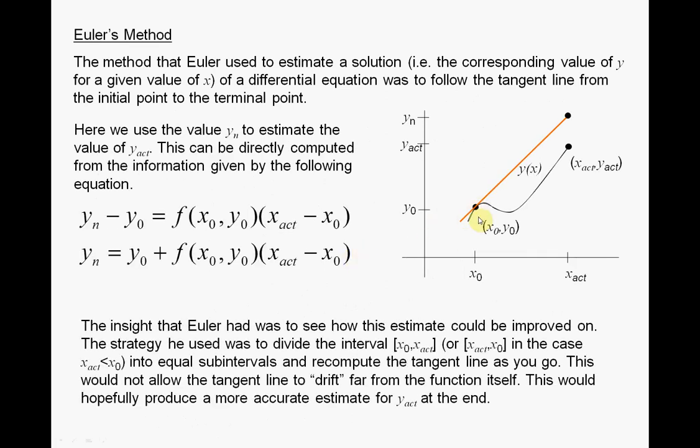Now Euler's method here, briefly, if we did Euler in one step, you have x0, y0, and you get the tangent plane there. And the tangent plane is in orange-yellow. And there's actual y-actual. And that would be the error that you would predict. Now that would only just be for one tangent plane.